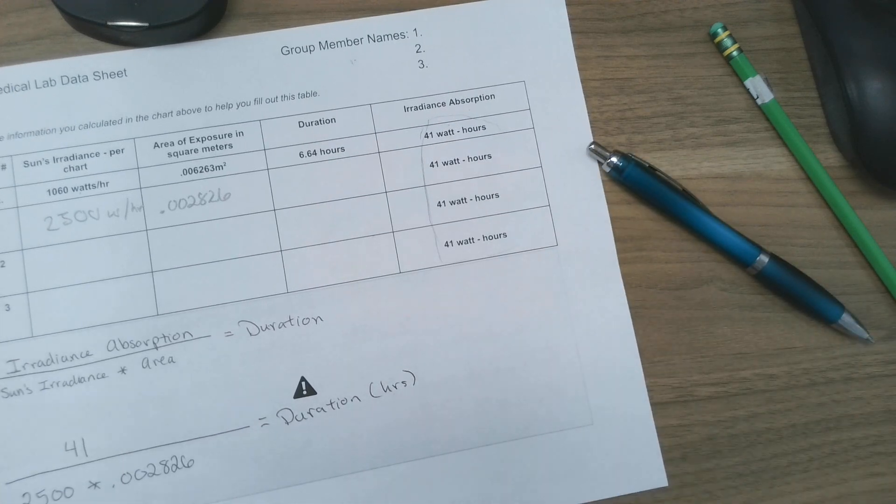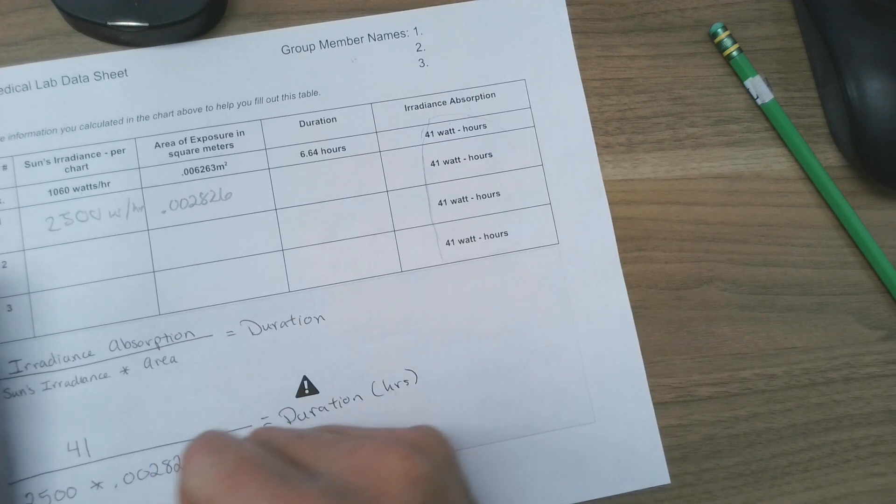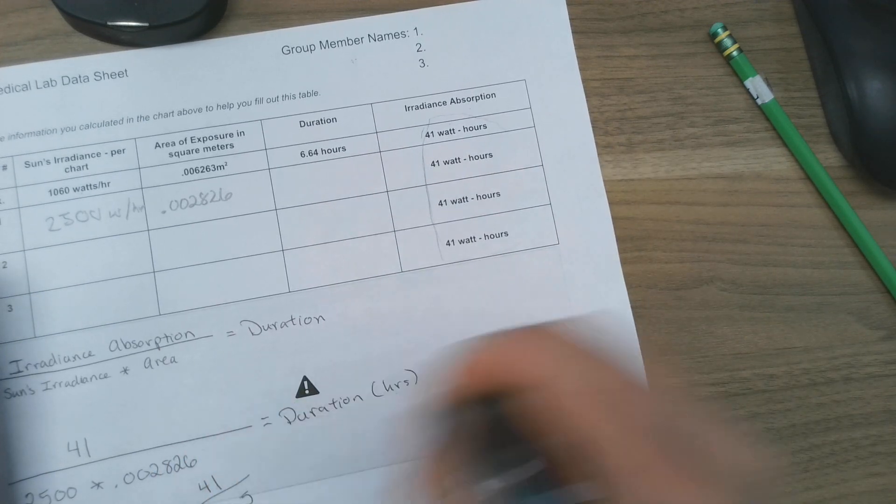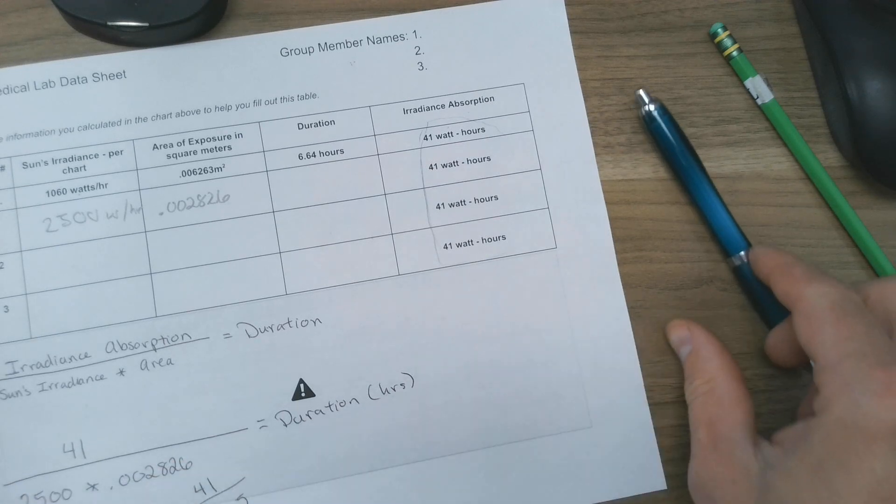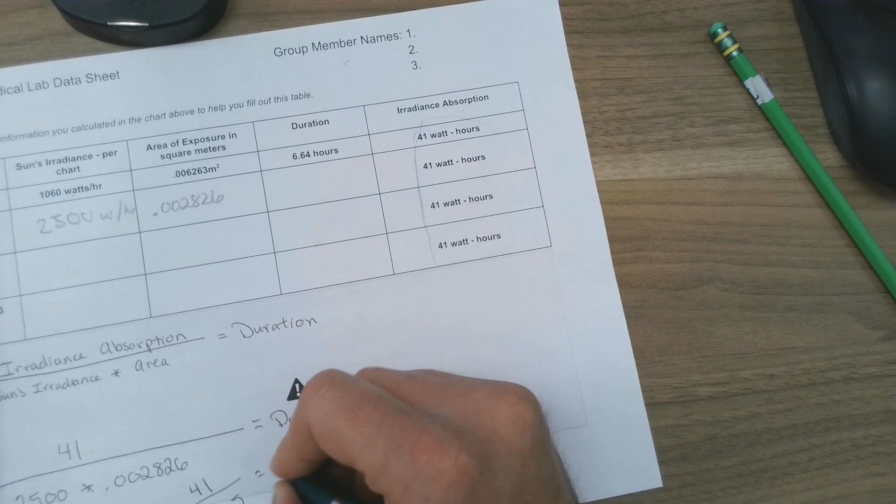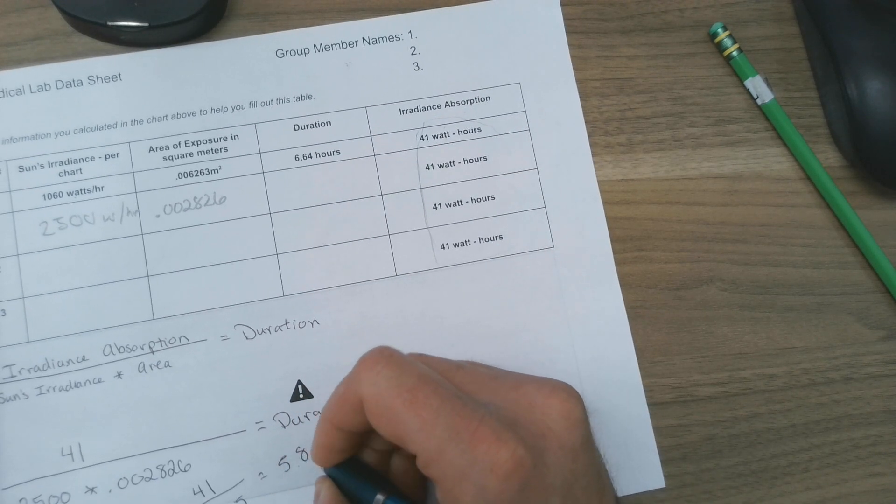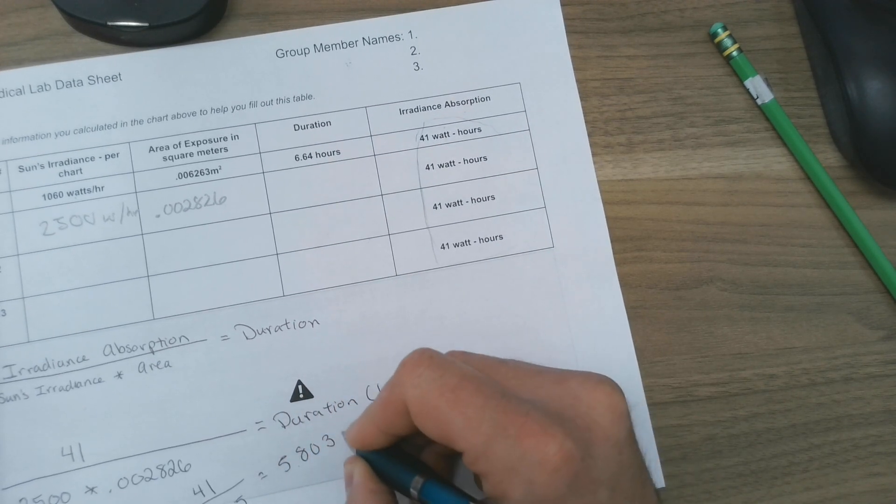Okay, so let's go ahead and use the handy old calculator here. All right, so we go 2500 times 0.002826. That gives us 7.065, and that's going to be under 41. So 41 divided by 7.065, that gives me 5.803 hours.